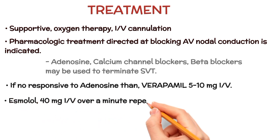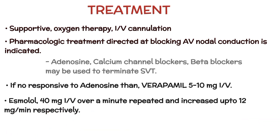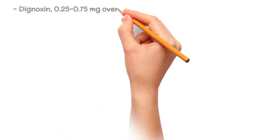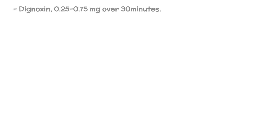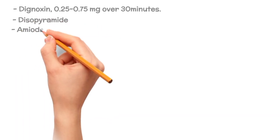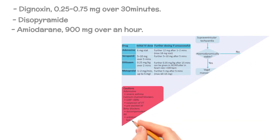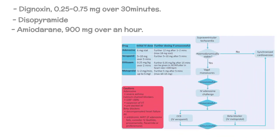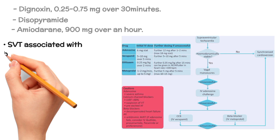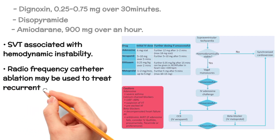Esmolol 40 mg IV over one minute, followed by 4 mg per minute, repeated and increased up to 12 mg per minute. Digoxin 0.25 to 0.75 mg over 30 minutes is not useful for acute control of SVT due to delayed peak effect and narrow therapeutic index. Disopyramide and amiodarone 900 mg over one hour may also be used. Electrical cardioversion is indicated for SVT unresponsive to drug therapy or associated with hemodynamic instability. Radiofrequency catheter ablation may be used to treat recurrent AVNRT.